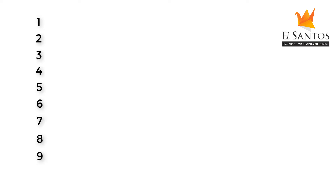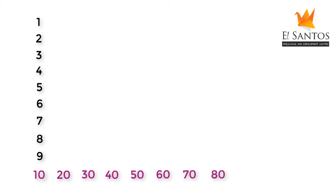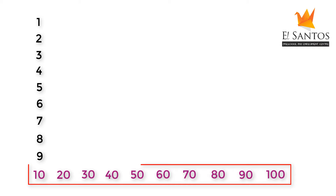We have already seen how to write the numbers 1 to 10 and 11 to 20 and how they are formed. We have also introduced the tens numbers as 10, 20, 30, 40, 50, 60, 70, 80, 90, 100, and we called them the power numbers because we can use them to create the next numbers.